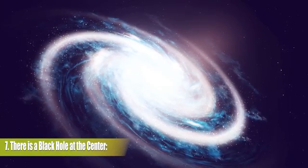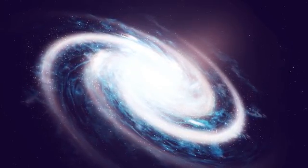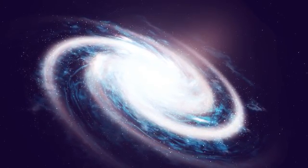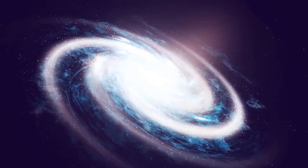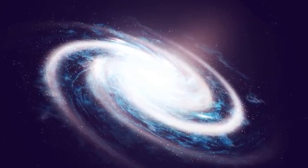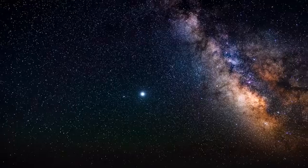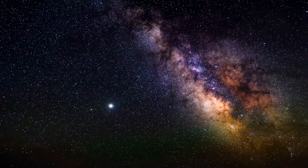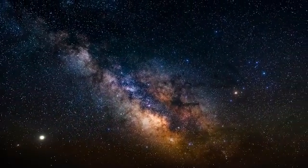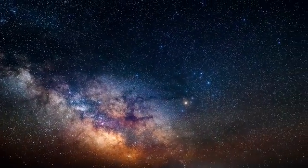7. There is a black hole at the center. The Milky Way is similar to most larger galaxies in that it has a supermassive black hole, SMBH, at its core. Sagittarius A asterisk, a huge radio source thought to be a black hole at the center of our galaxy, is around the size of Mercury's orbit and measures 22.5 million kilometers, 14 million miles, across.